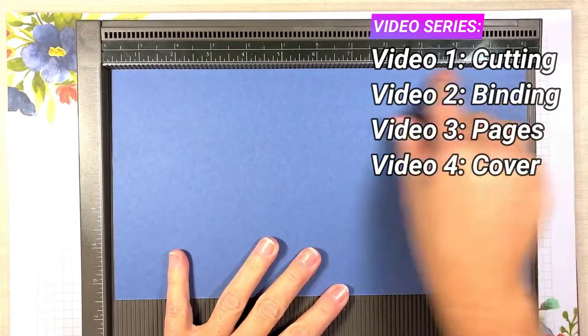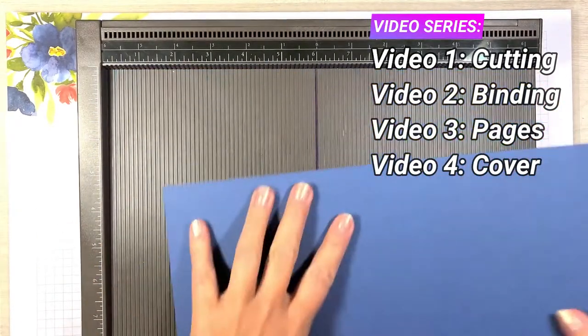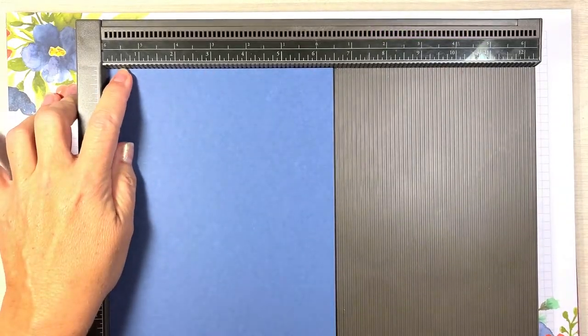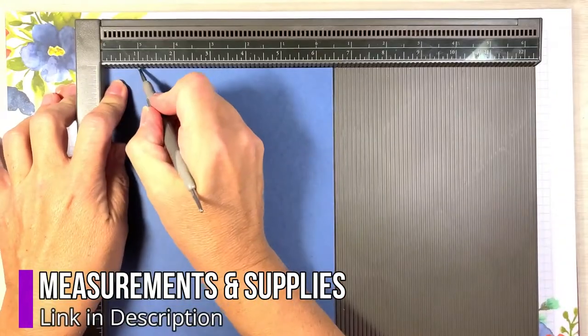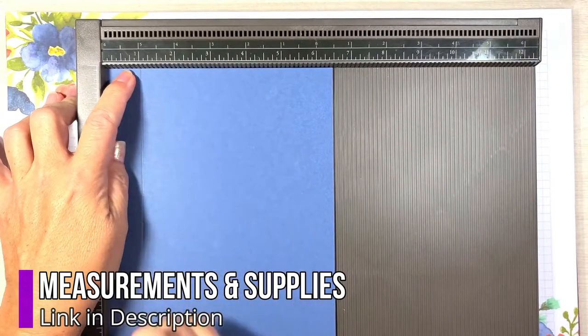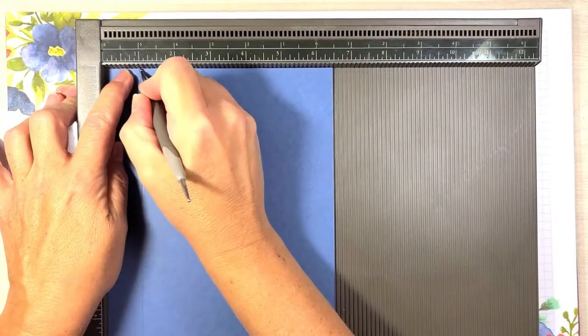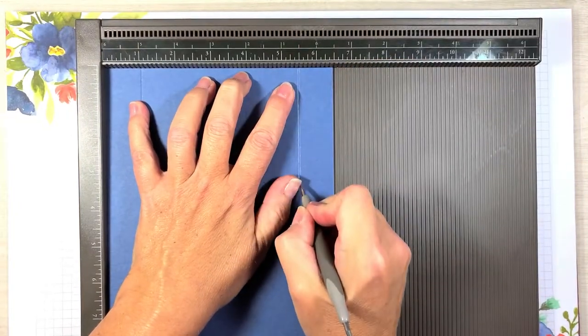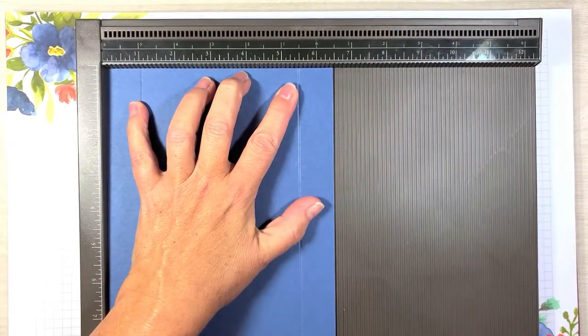Again this is the six and a half by twelve inch piece. We are going to turn it on the short side at the top which is the six and a half and we're going to score at the one inch line and the five and a half inch line.